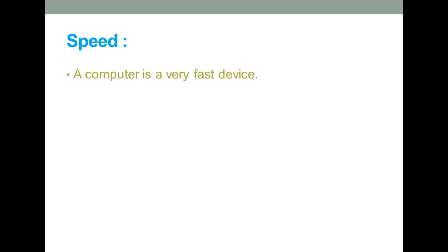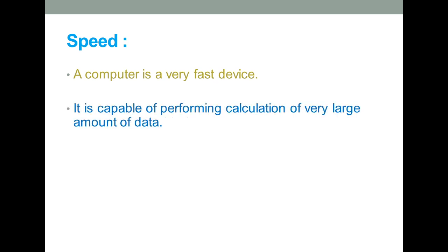The first characteristic is speed. A computer is a very fast device. For example, if a large calculation task is given to a human being and also to a computer, the computer will perform that work much faster because it works in fractions of seconds. A computer is capable of performing a large number of calculations within seconds.